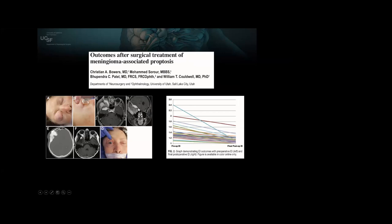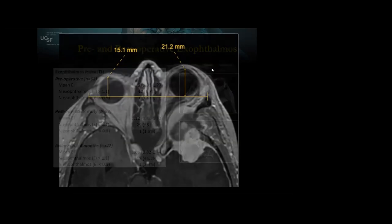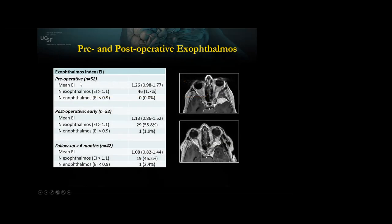You draw a line across between the anterior aspect of the frontozygomatic process and measure the distance to the front of the lens. In this case the proptosis index would be 21.2 divided by 15.1 — a number greater than 1.0. Our preoperative proptosis indices were 1.26, early post-operative at six to eight weeks was 1.13, and greater than six months was 1.08. Very good reconstructions.